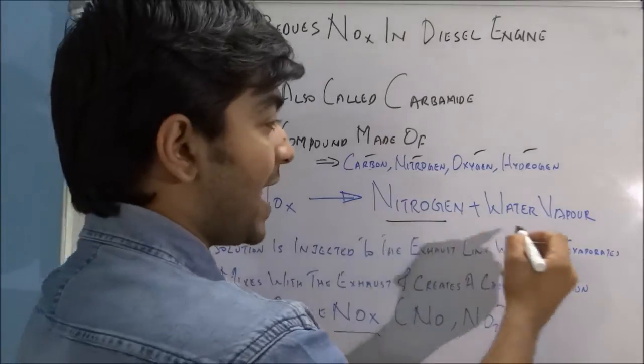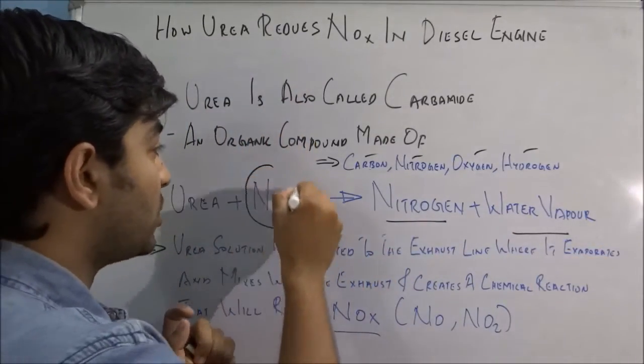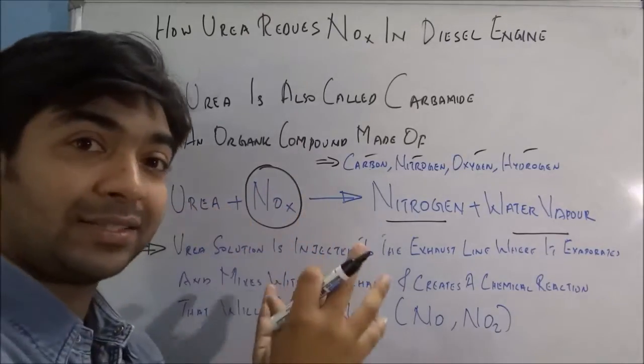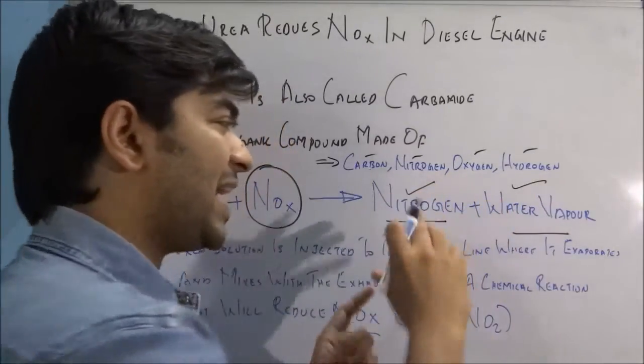So the harmful component, that's the NOx, is being divided when it reacts with urea into less harmful components, which are nitrogen and water vapor. You can see the nitrogen is not even a harmful component.